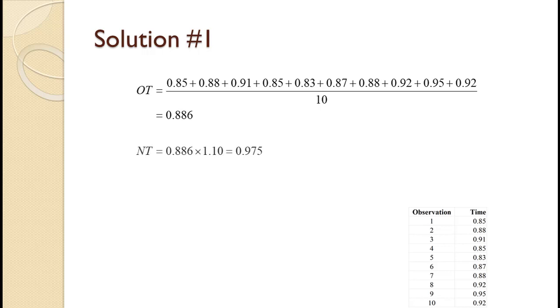The worker was rated at 1.1, so we find the normal time by multiplying the observed time of 0.886 times the performance rating of 1.10. That gives us 0.975.